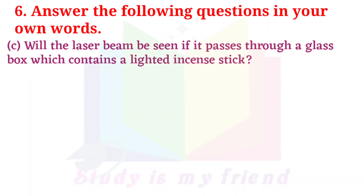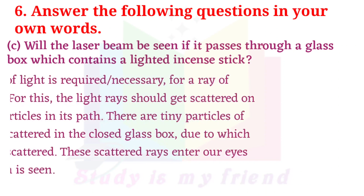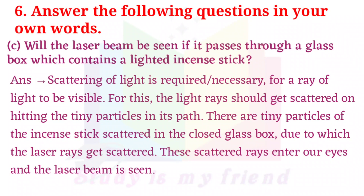C. Will the laser beam be seen if it passes through a glass box which contains a lighted incense stick? Answer: Scattering of light is necessary for a ray of light to be visible. The light ray should get scattered on hitting the tiny particles in its path. There are tiny particles of incense stick scattered in the closed glass box, due to which the laser rays get scattered. The scattered rays enter our eyes and the laser beam is seen.